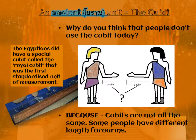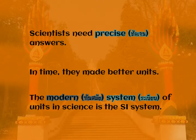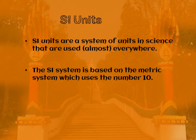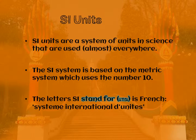We do not use the cubit anymore. Scientists need precise answers, so they made better units. The modern system of units in science is the SI system. SI units are a system of units used almost everywhere in science — there are some parts of the world that don't use it, such as America, which doesn't use all the SI units because they are metric units. The SI system is based on the metric system, which uses the number 10 as its base.